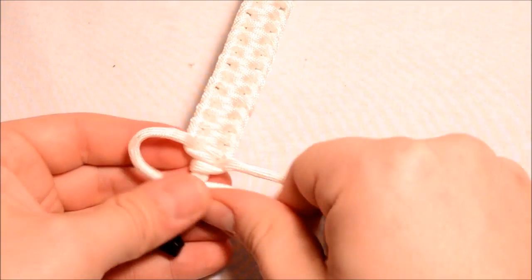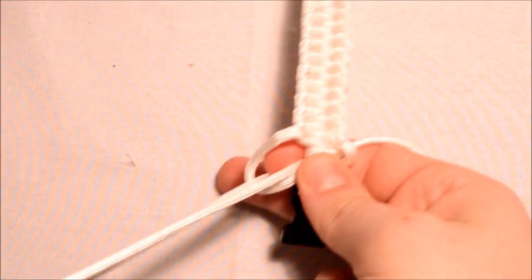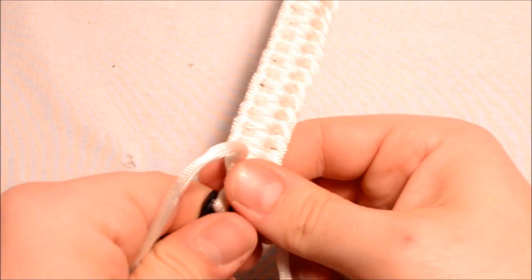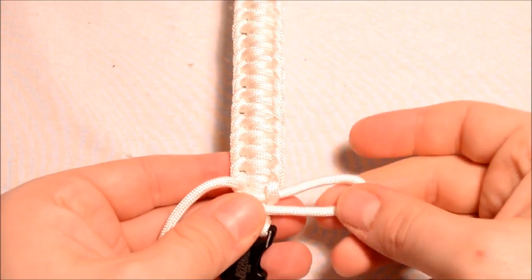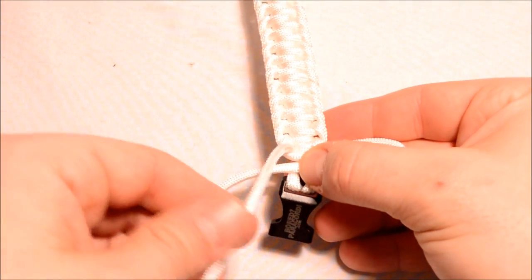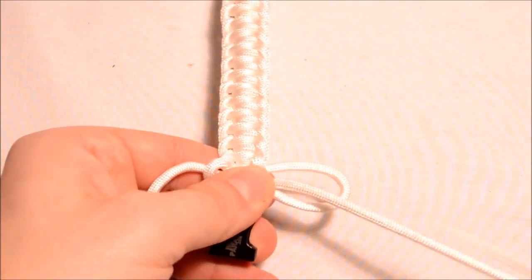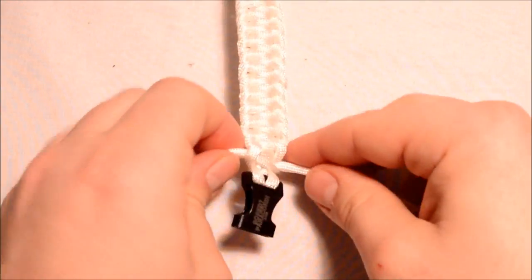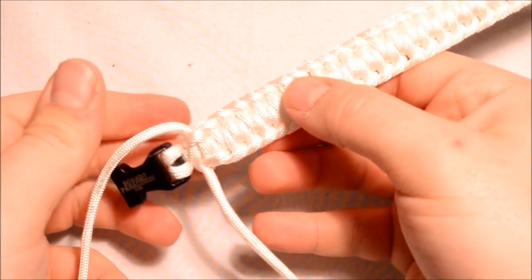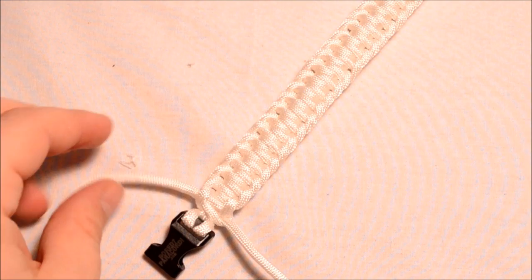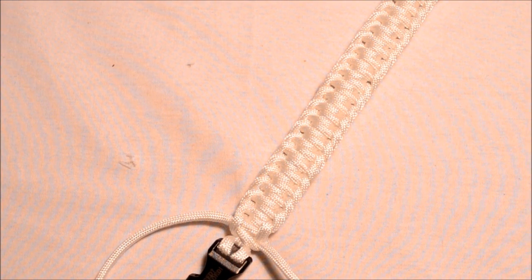I like to do a Solomon knot, which is create a loop on the left, take your right side over that, go around the back and through. You're going to want to do two of these so that you can get it nice and tight. Now do it on the right side, create your loop, take your left cord over, and then go under and then through that loop. I'm going to pull that nice and tight. It doesn't affect the look of the bracelet a whole lot. Then grab my scissors and the lighter.